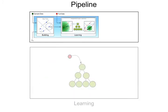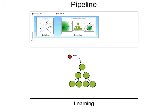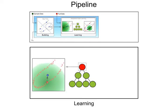Then, we learn this distribution by propagating data points through the tree. Each point is propagated using its position. Each time this point goes through a node, the covariance matrix associated with the node is updated.